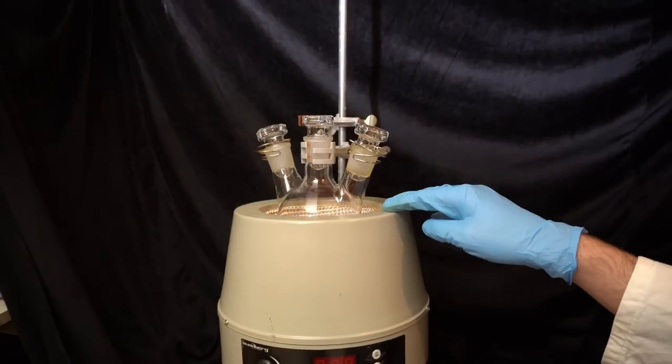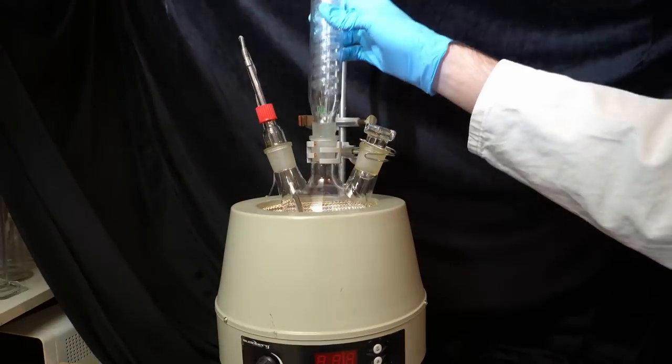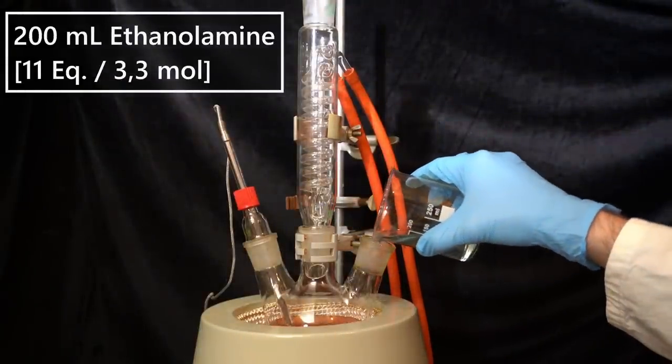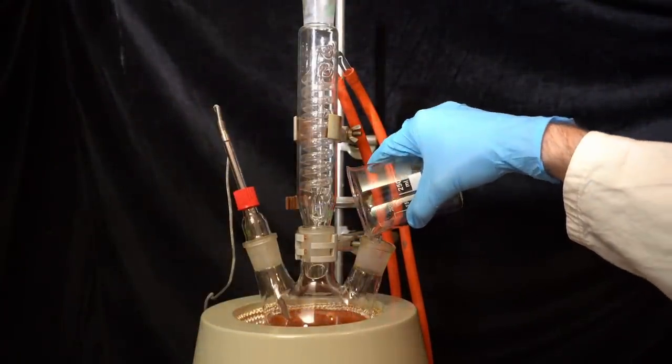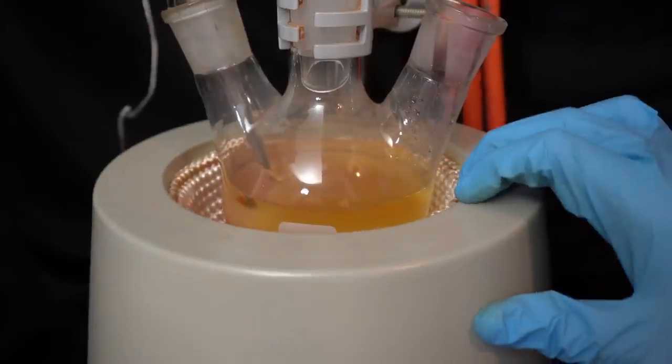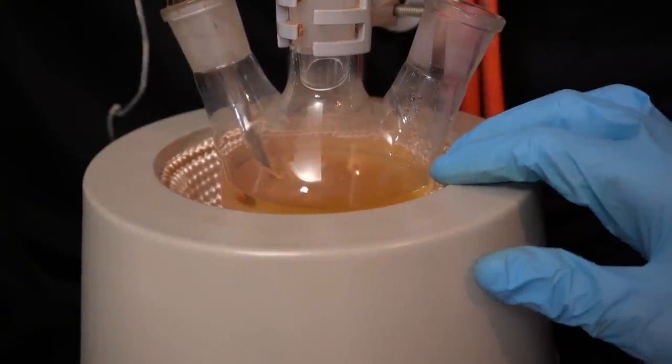I then install a reflux condenser and a heating mantle and add 200 milliliters of ethanolamine to the flask. The heat is then turned up to get the mixture to reflux temperature which for ethanolamine is at around 170°C.